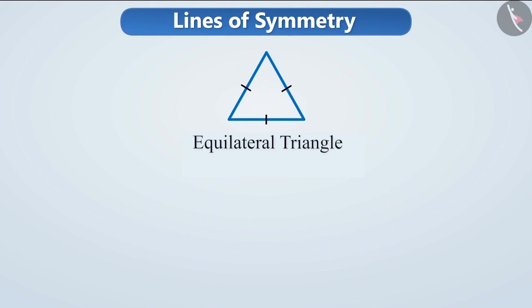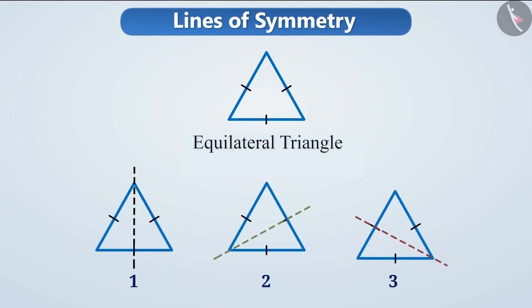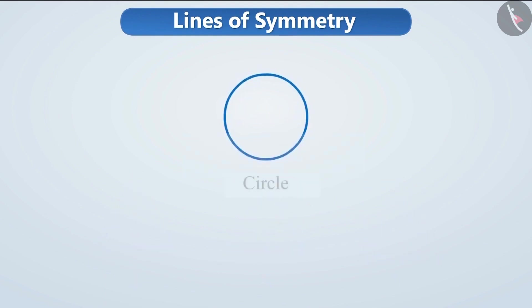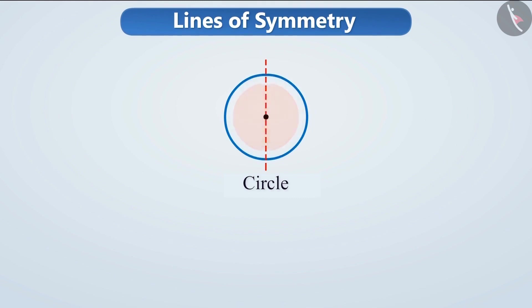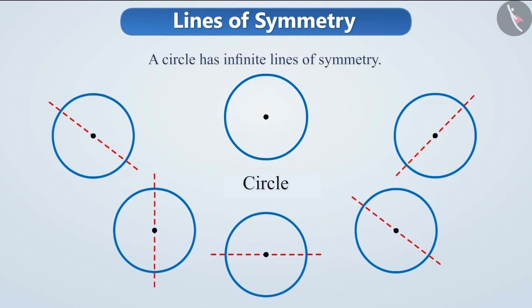Similarly, three lines of symmetry could be seen in an equilateral triangle. But if we look at a circle, any line passing through its center is a line of symmetry. And since there are an infinite number of lines which can pass through the center, a circle has infinite lines of symmetry.